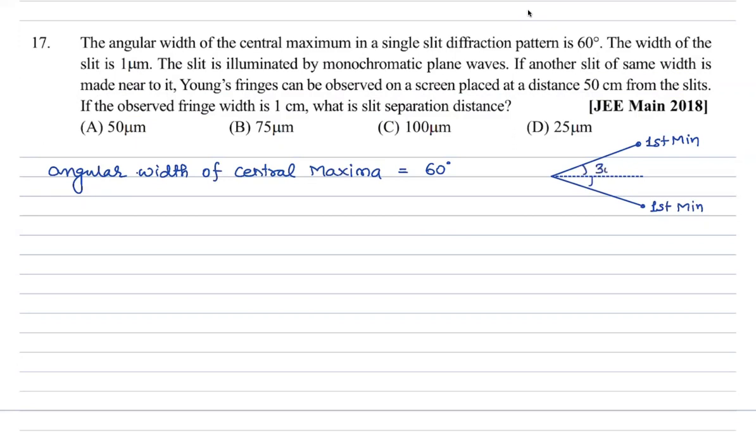For minima: b sin theta = m lambda. So b into sin 30 = 1 into lambda, where b is 1 micrometer = 10⁻⁶. We can find lambda value. So lambda = 5 into 10⁻⁷ meter.